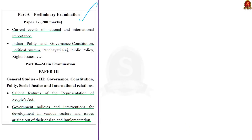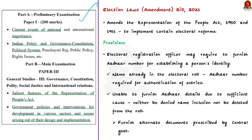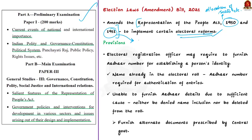The syllabus relevant to this discussion is given for your reference. This Election Laws Amendment Bill implements certain electoral reforms and mainly amends two election laws: the Representation of the People Act of 1950 and the Representation of the People Act of 1951. The 1950 Act provides for allocation of seats, delimitation of constituencies, qualification of voters, and preparation of electoral rolls. The 1951 Act provides for the conduct of elections and deals with offenses and disputes related to elections. This 2021 bill aims to amend both these acts.